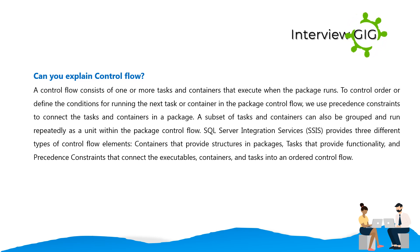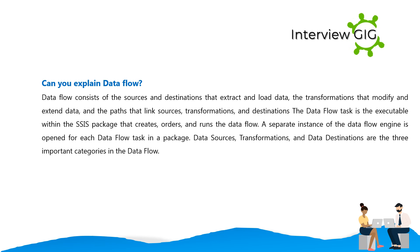A control flow consists of one or more tasks and containers that execute when the package runs, controlling order or defining conditions for running the next task or container. We use precedence constraints to connect tasks and containers in a package. A subset of tasks and containers can be grouped and run repeatedly as a unit. SSIS provides three types of control flow elements: containers, tasks, and precedence constraints.